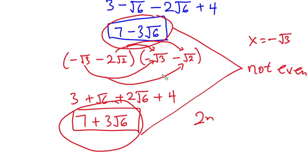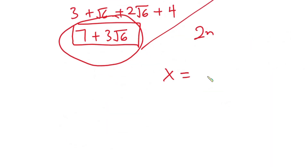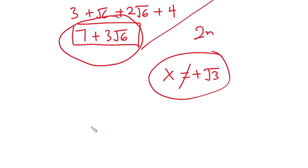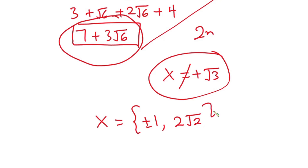Neither 7 minus 3√6 nor 7 plus 3√6 is an even integer, so plus or minus √3 are not solutions to this problem. In summary, the values of x that satisfy the equation are x equals plus or minus 1 and x equals 2√2. Thanks a lot for watching — see you again in the next video.